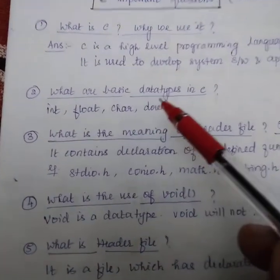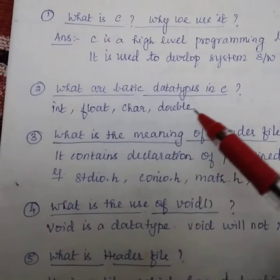Second question, what are the basic data types in C? Int, float, char, double.